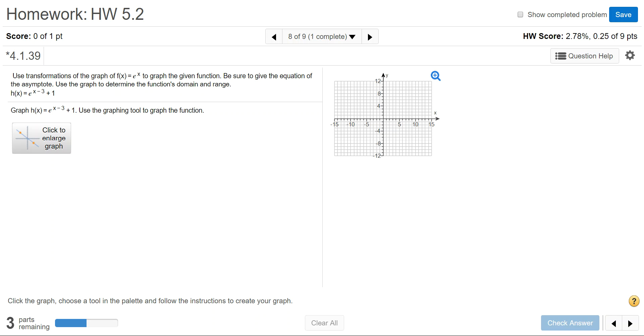In this example, I'm going to demonstrate how to graph an exponential function on MyMathLab that has two movements. We're going to start with the graph f(x) = e^x, and we want to graph h(x), which is e^(x-3) + 1.